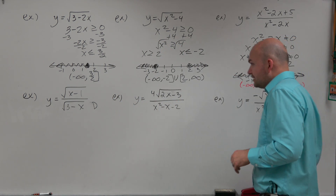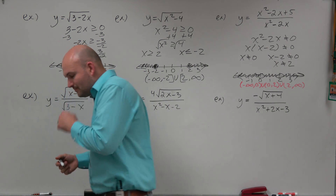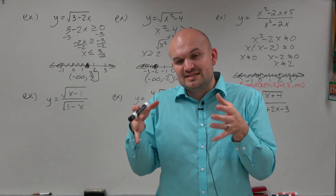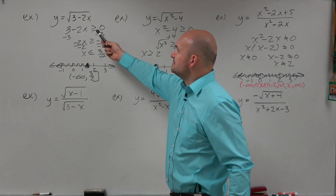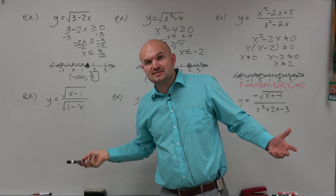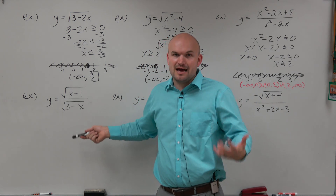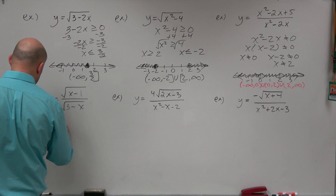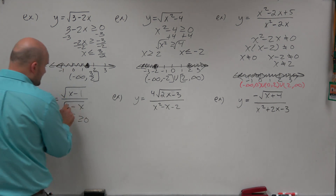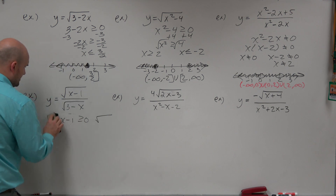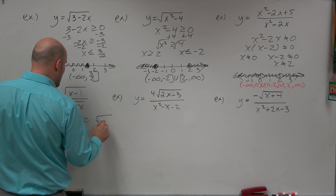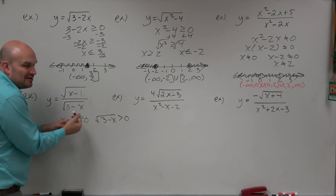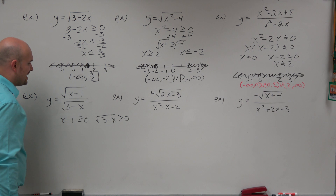In the next example, we have a radical in both the numerator and denominator. When you have a radical in the numerator and denominator, you follow the same steps as the first two examples. The only difference is remembering that the denominator cannot equal 0. Typically we said the radicand has to be greater than or equal to 0, but the denominator's radicand has to be strictly greater than 0 — it can't equal 0, because that would make the denominator 0 and create another restriction. So we set up two cases, treating each radical separately: the numerator's radicand x minus 1 ≥ 0, and the denominator's radicand 3 minus x > 0.